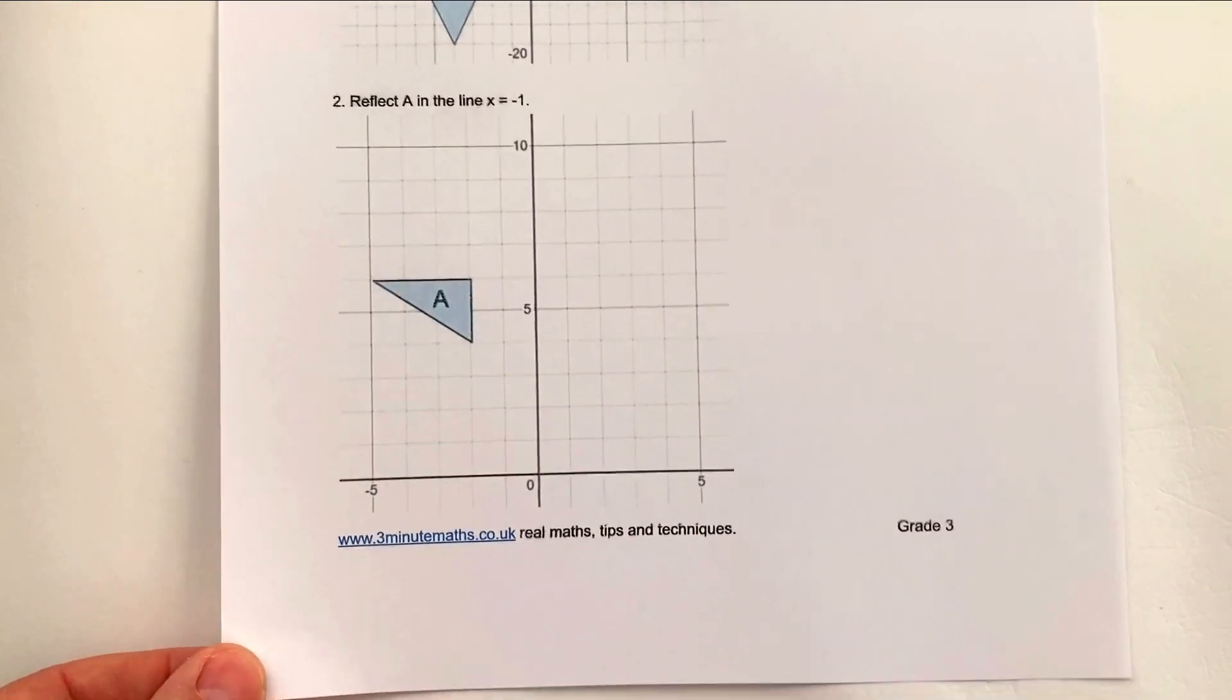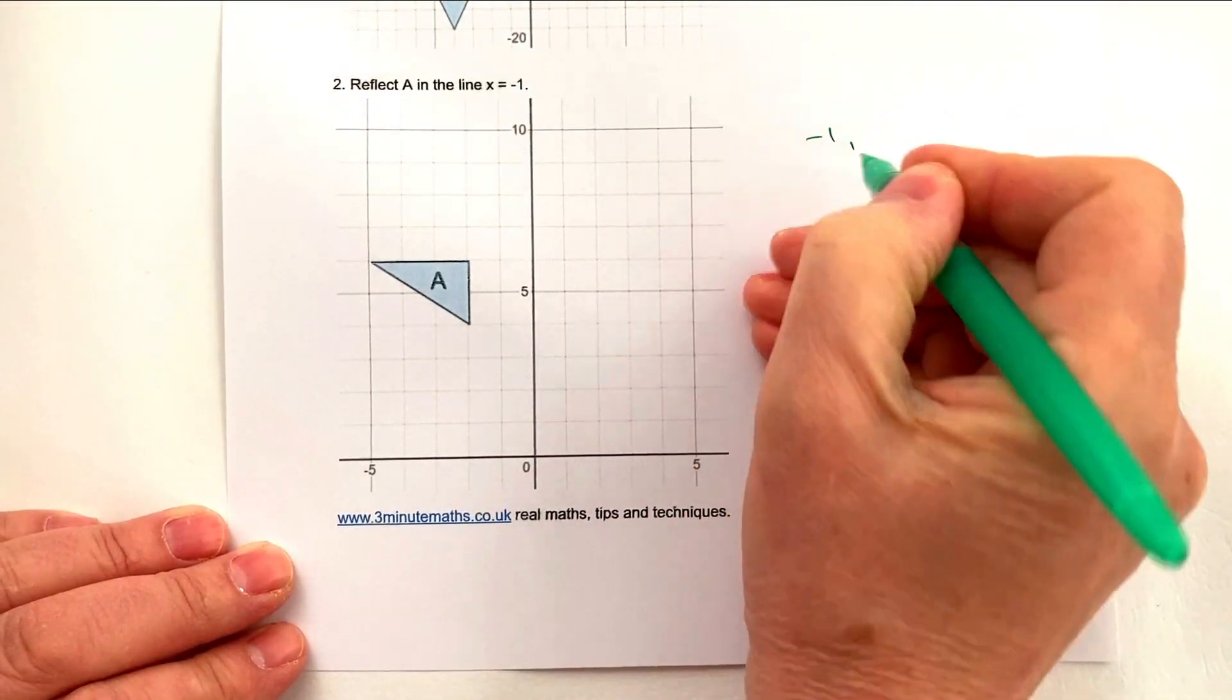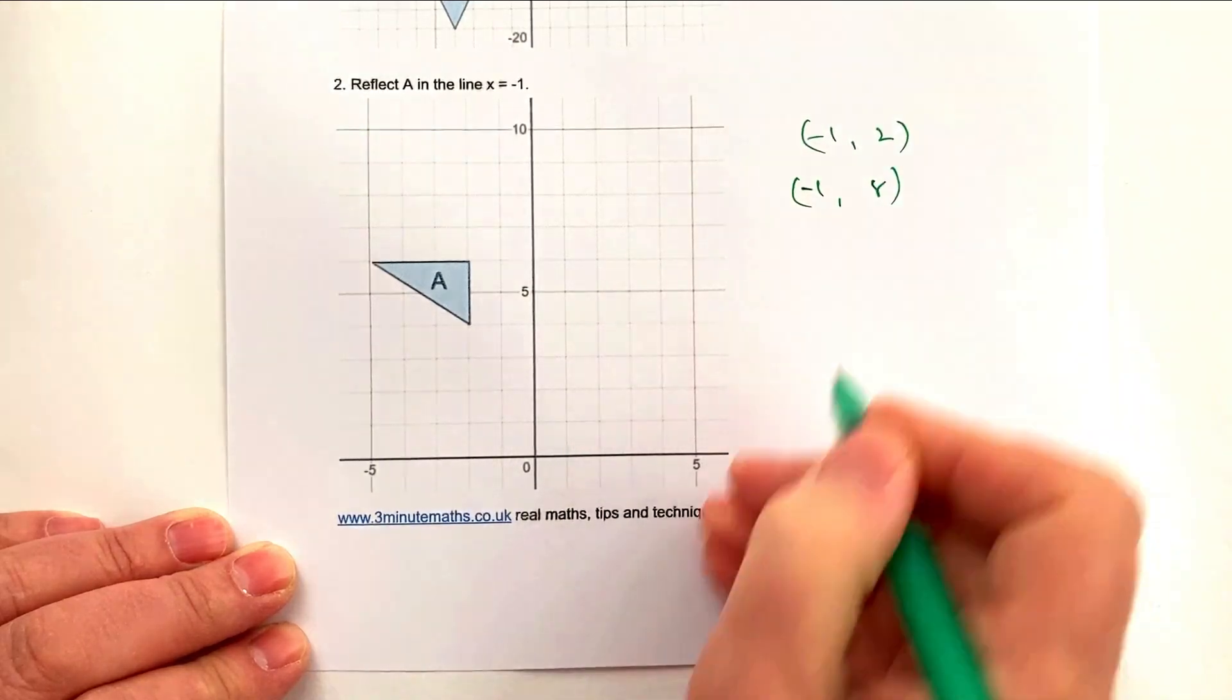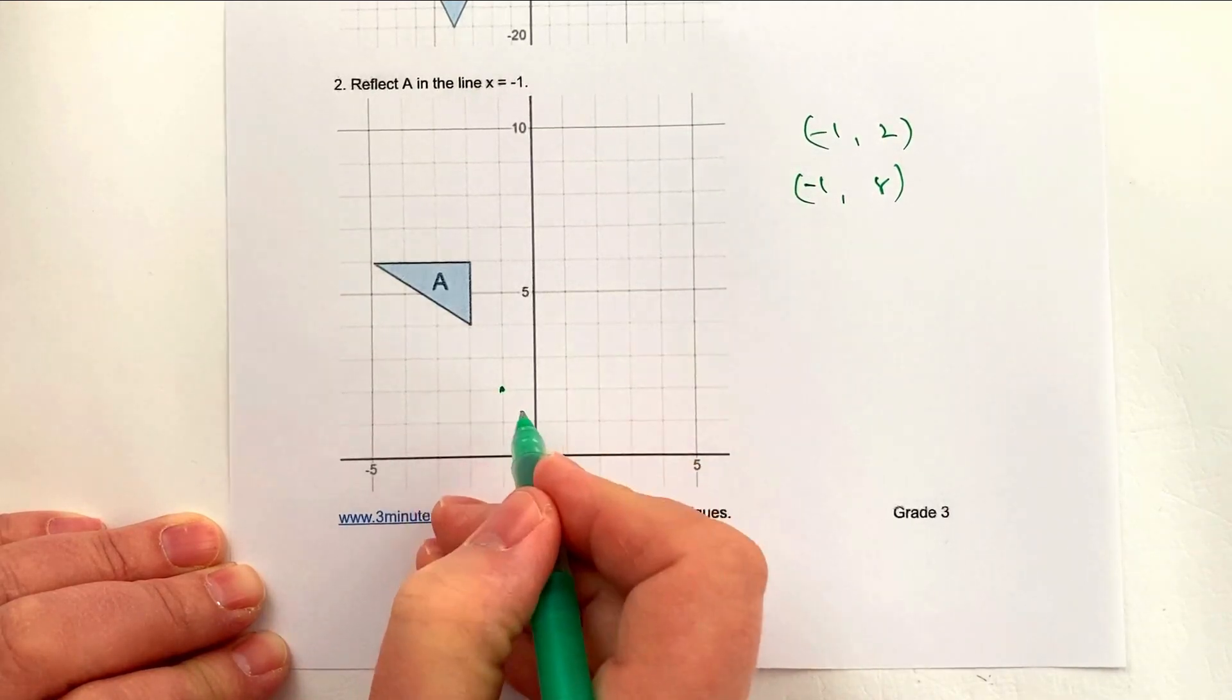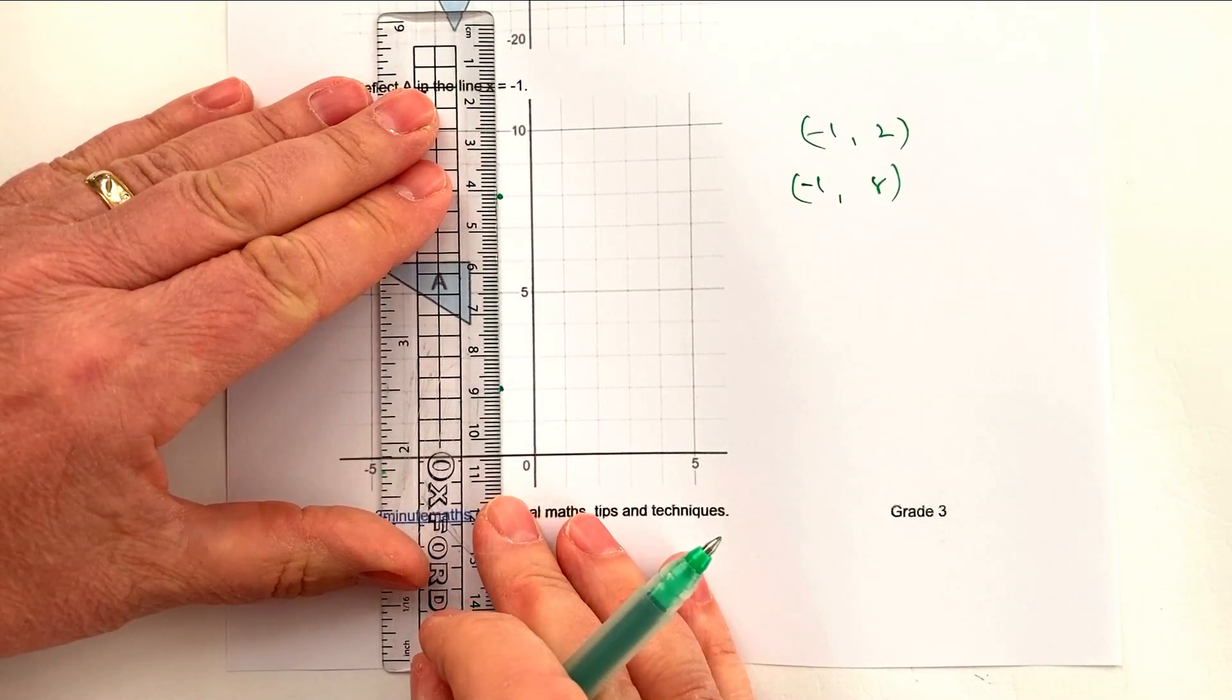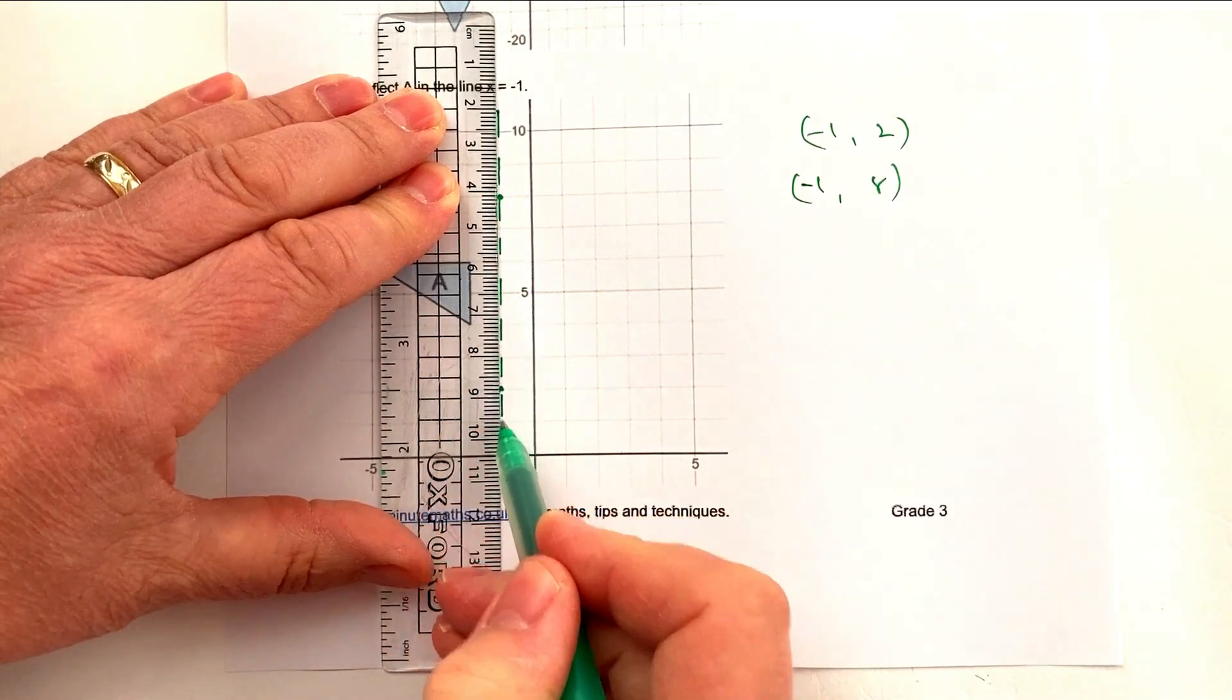Let's look at the next one. It says reflect A in the line x equals minus one. We've got to figure out where x equals minus one is. You can pick a random coordinate where x is minus one and let's say y is two, or x is minus one and y is eight. We can plot both of those: minus one and two is going to be here, and minus one and eight is going to be here. When I join those two points up, I've got the line x equals minus one, which in this particular case is the mirror line.